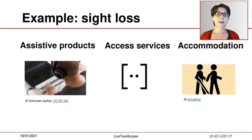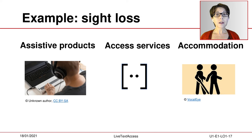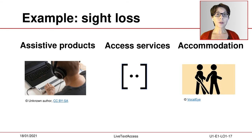An example of assistive products, access services and reasonable accommodations for persons with sight loss: a university professor with sight loss uses a screen reader — an assistive product — on his or her computer to create lectures and work in general. When this professor must speak at a conference, he or she may request the university to provide a sighted guide to assist with travel and navigating the conference centre — this would be a reasonable accommodation. At home, this professor may use the access service called audio description to watch a movie.